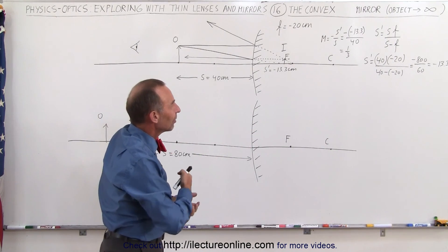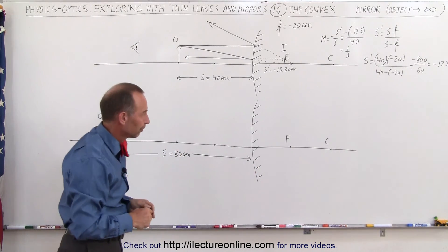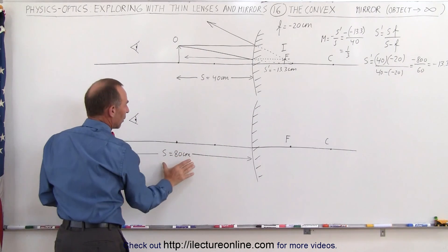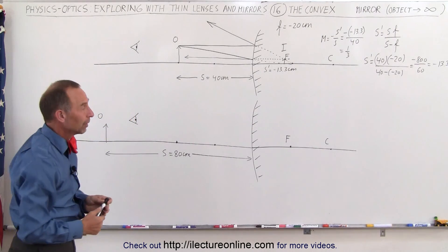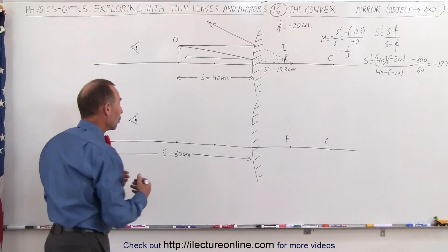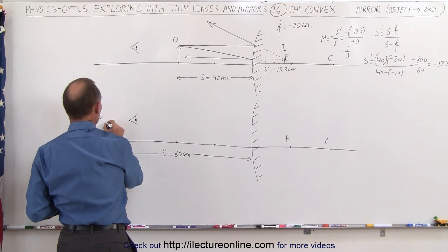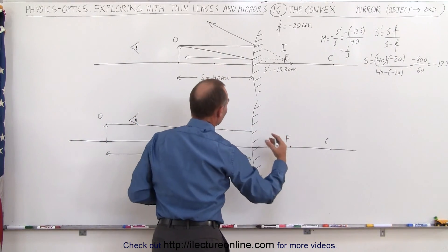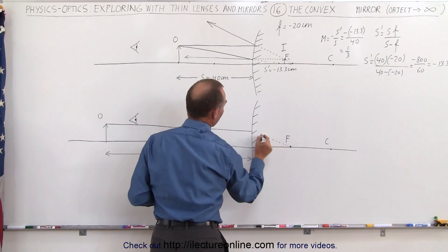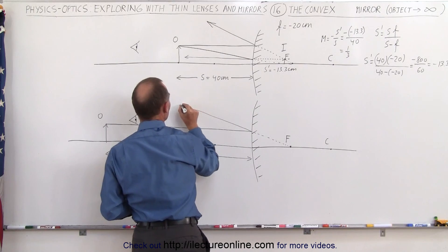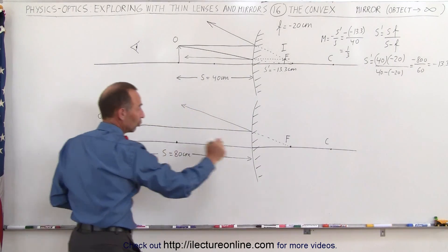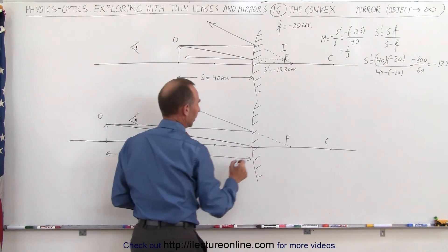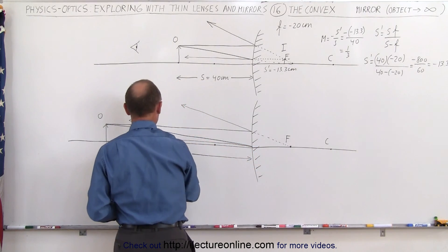The negative S prime distance means it's behind the mirror, therefore a virtual image. Now what happens when we take the object and move it twice as far away? Instead of 40 centimeters, it's now 80 centimeters from the mirror. We do the same thing again — draw the ray diagram to see where the image will appear. We draw the parallel ray to the mirror just like before; it will reflect as if it came from the focal point. The second ray is drawn from the tip of the object toward the focal point on the other side of the mirror, and the mirror intercepts, reflecting the ray back parallel to the optical axis.